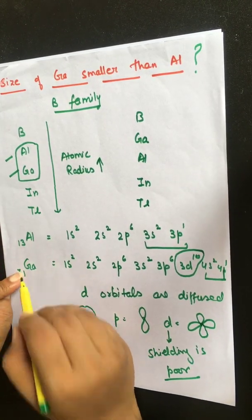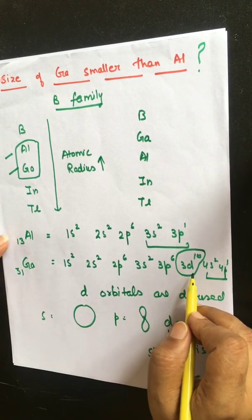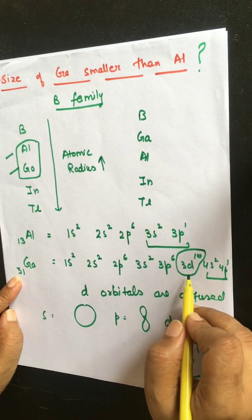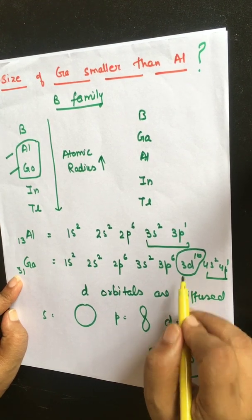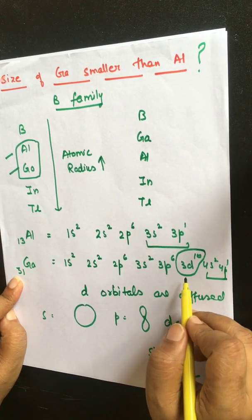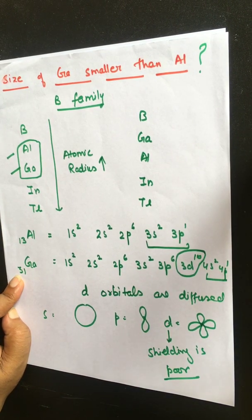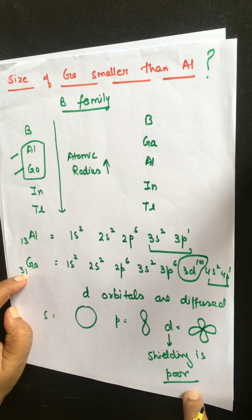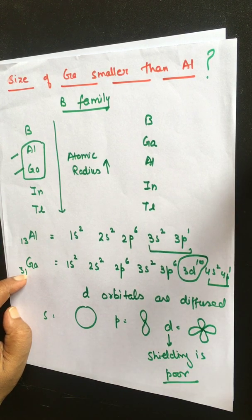When we move from aluminium to gallium, d-electrons are accommodated, and their shielding effect is poor. The number of protons increases from 13 to 31, electrons are also increasing, but the extra electrons in gallium are d-electrons whose shielding is poor. Because shielding effect is poor, Z-effective will definitely increase. So moving from aluminium to gallium, due to poor shielding of d-electrons, the force of attraction between the valence electrons and the nucleus increases.